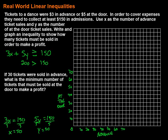Let's graph our intercepts: x = 50 gives us a point on the x-axis, and y = 30 gives us a point on the y-axis. Now we have to remember what type of line this should be since we're graphing an inequality. It should be a solid line because it has the equal-to part, so we go ahead and create a solid line connecting our two intercepts.